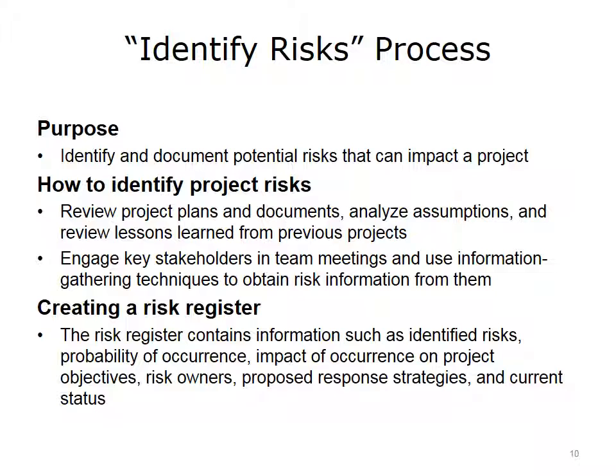You may want to conduct focus groups or interviews to gather this information. The risk register contains information that you have identified, such as: What are the identified risks? What is their probability of occurrence? What is the impact of occurrence? How does that impact different project objectives? Who are the risk owners? What are the proposed response strategies for the risks? What is the current status of each of the response strategies? The register is monitored throughout the life of the project and updated continuously as new risks are identified or there are changes to current risks.